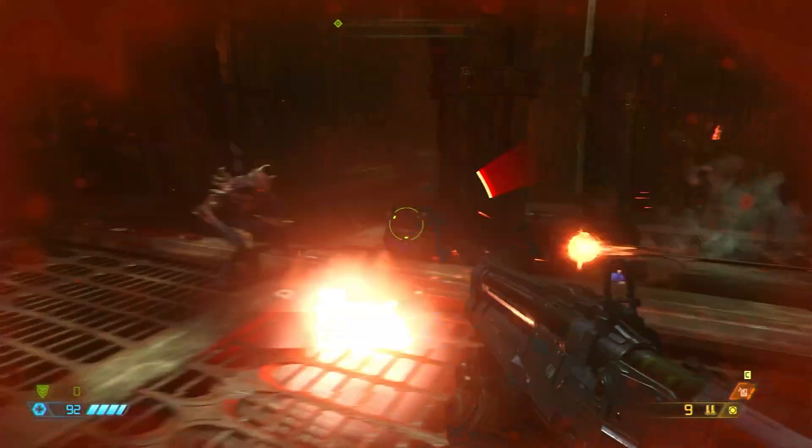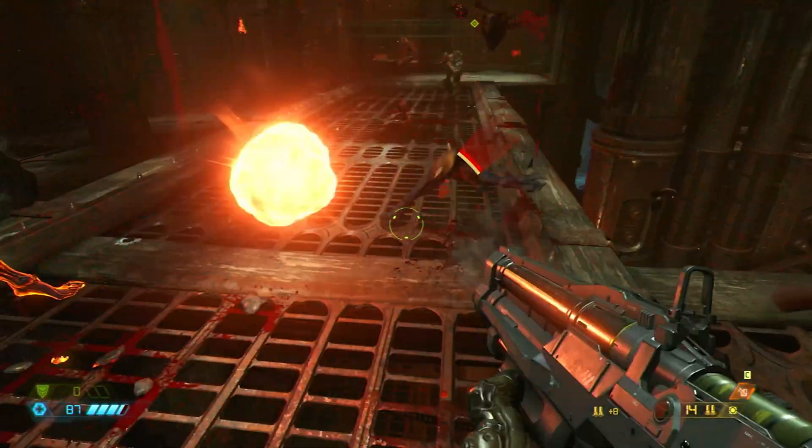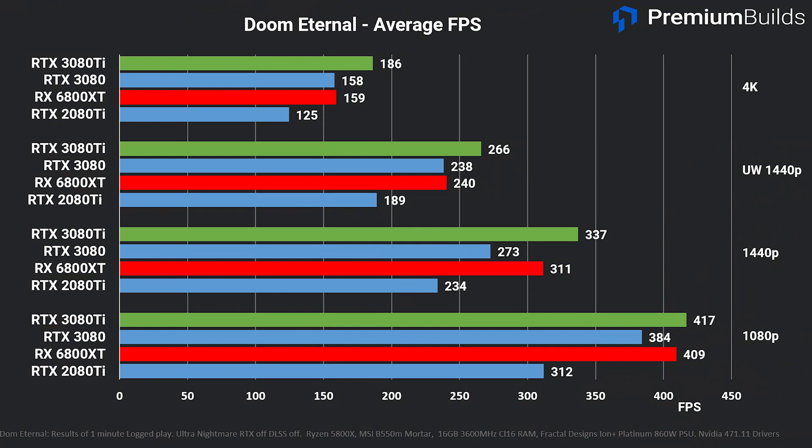Doom Eternal uses Vulkan drivers and is well optimised, and here we can compare the RX 6800 XT which performs well at lower resolutions. The RTX 3080 Ti has a more convincing lead over the RTX 3080 in this title, particularly at higher resolutions. At 1440p it holds 330 fps versus 274 for the RTX 3080, and at ultrawide it's 266 fps over the RTX 3080's 238 fps. At 4K the 3080 Ti manages 186 fps with the RTX 3080 and the RX 6800 XT tied at 160 fps.